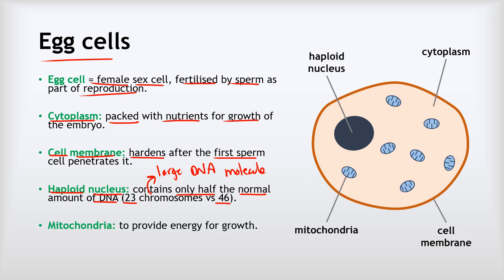Our last adaptation of the egg cell is the mitochondria. All animal cells have mitochondria, but egg cells have far more than usual, and that's to provide energy for the growth of the embryo when the egg cell gets fertilised.